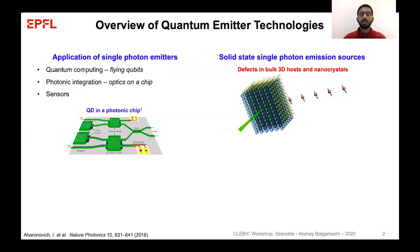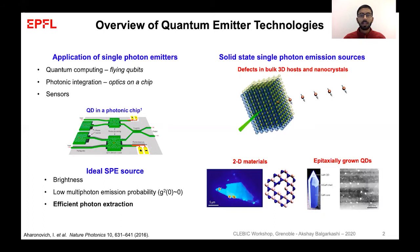These emitters could come in various different forms like defects in nanocrystals like diamond, epitaxially grown quantum dots, and 2D materials. They have properties like high brightness and low multiphoton emission probability, and when combined with the nanowire geometry, we could take advantage of efficient photon extraction as well.